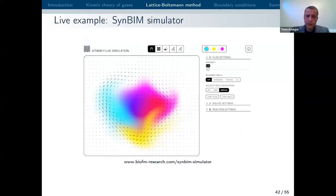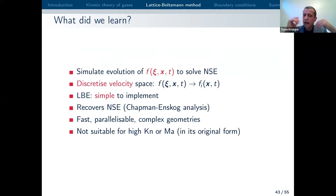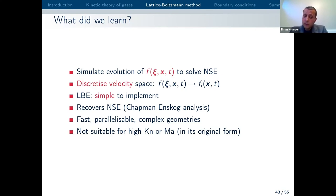Let me go back to my main presentation. So, what did we learn? We need to simulate the evolution of the distribution function f to solve the Navier-Stokes equation. We need to discretize velocity space in particular, and I gave you some idea how this can be done. The lattice Boltzmann equation is quite simple to implement, but of course the devil is in the details if you want high accuracy methods and additional physics — it gets arbitrarily complicated. It would be wrong to say lattice Boltzmann is always simple.